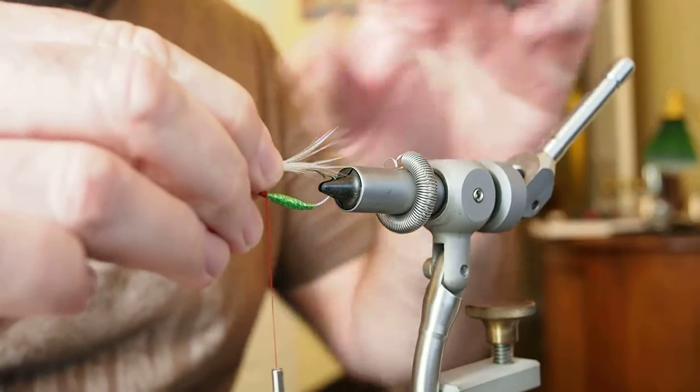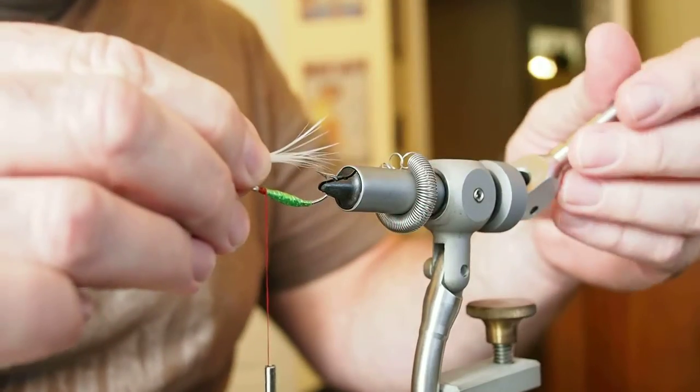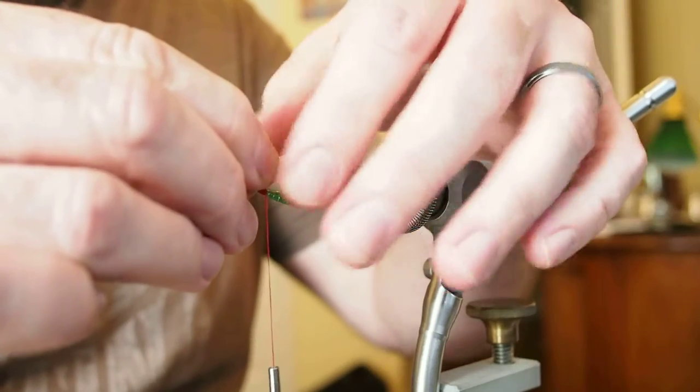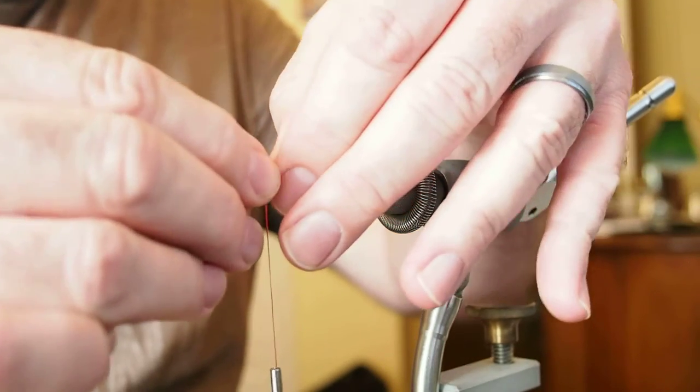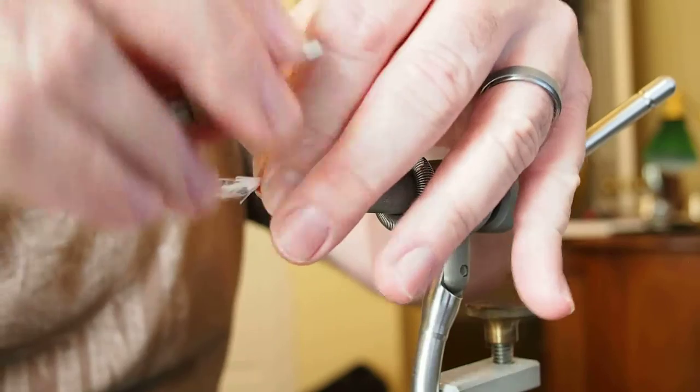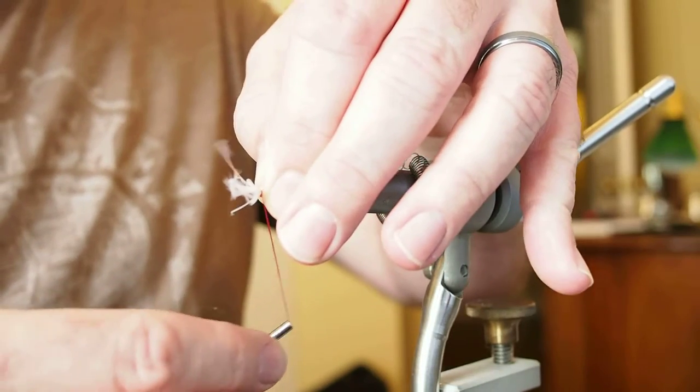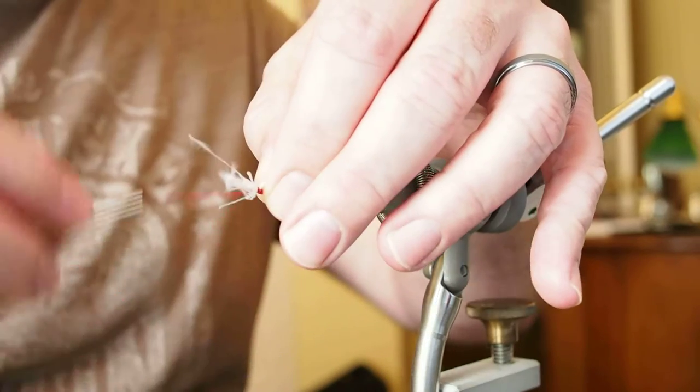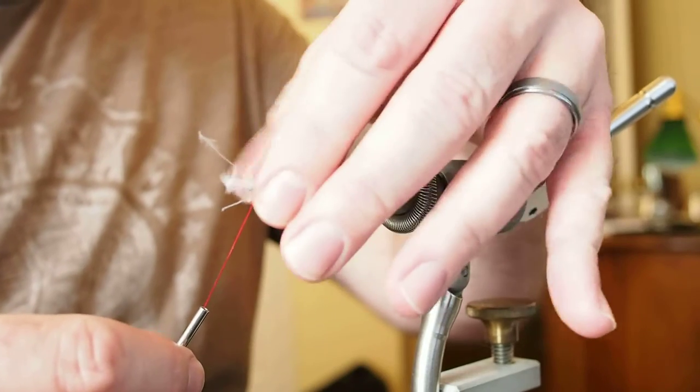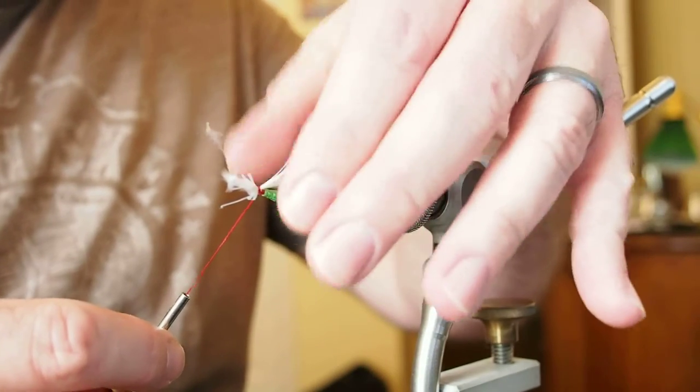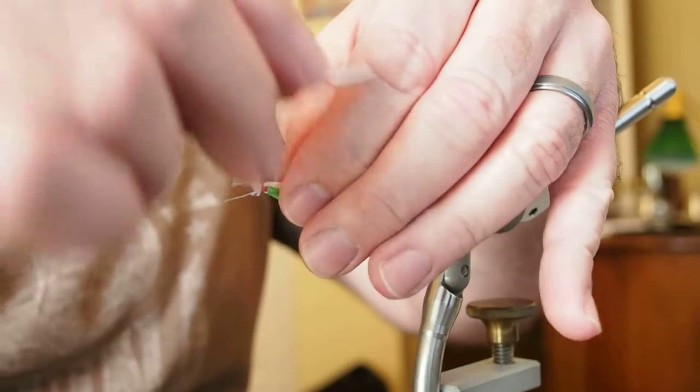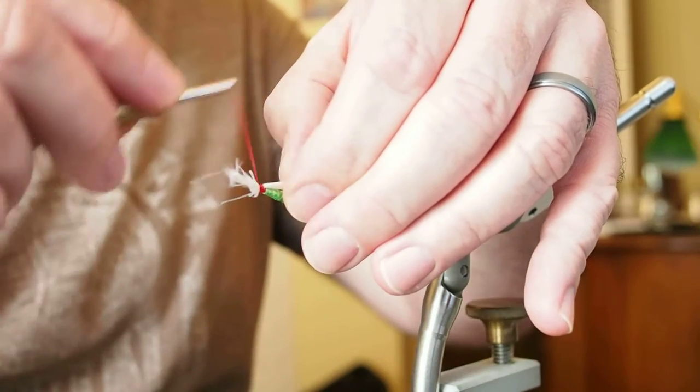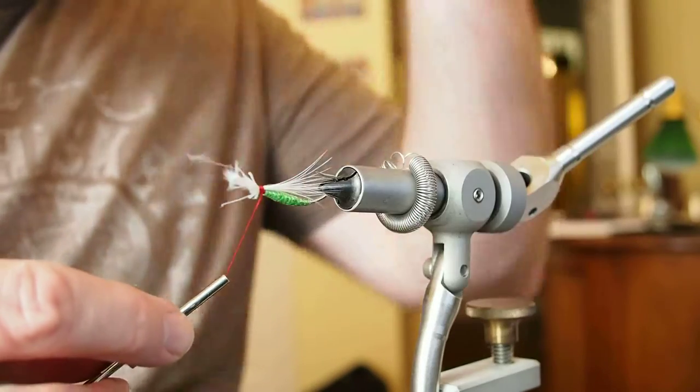Now we want to tie in the tips about the length of the bend, not too much further. And I'm just going to tie that in with the pinch wrap, pull straight down, give a couple more wraps just to capture, and then take a look. That might be a little bit thick materials, but still a good looking fly.